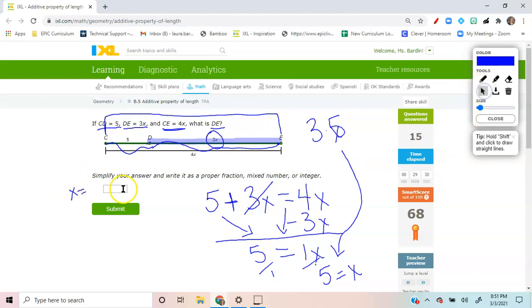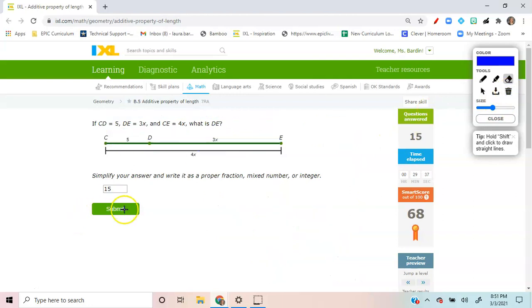What is 3 times 5? Yes, it is 15. So I think we got our answer. 3 times 5 is 15. And submit. Let's do it. Let's do another one. Are you ready?